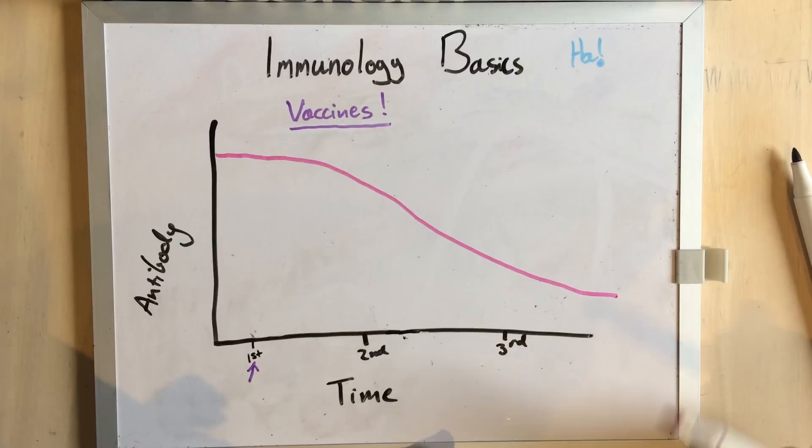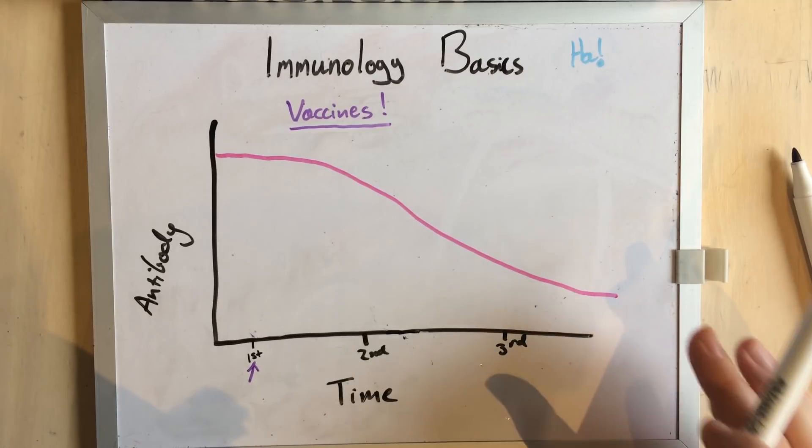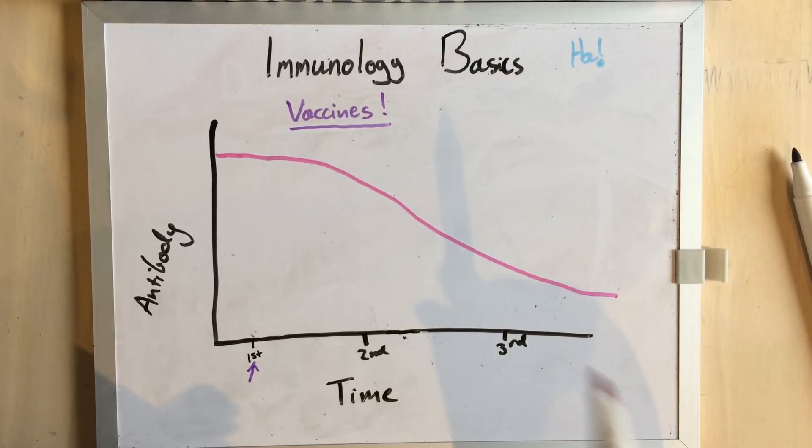And these antibodies from mum offer protection, but they haven't trained that baby animal's immune system to respond to that disease. So they're great, they're very useful, but they often mean the animal won't respond to a vaccine if you give it too young.